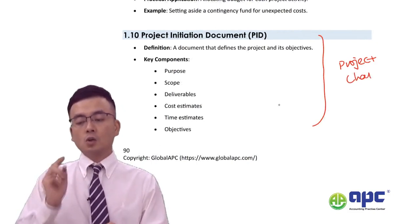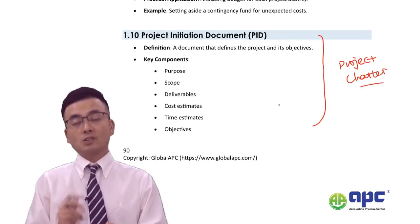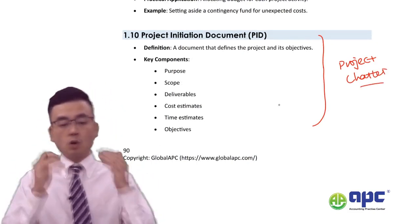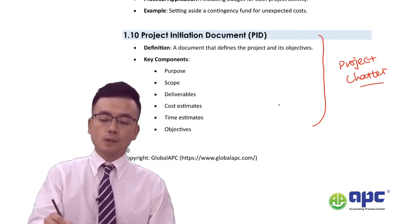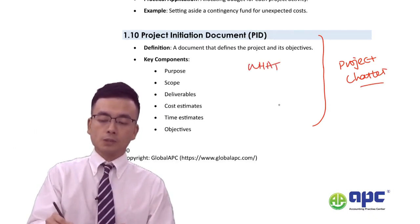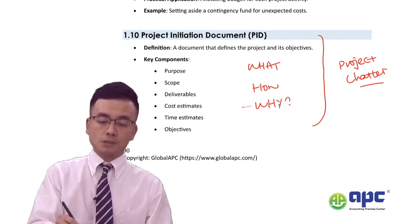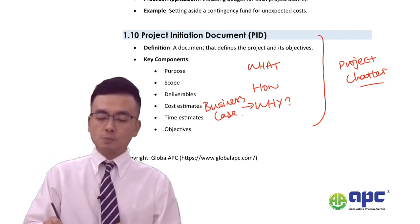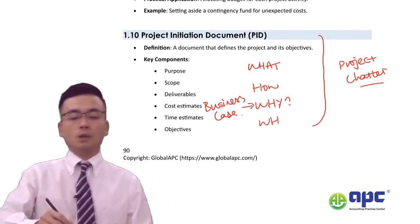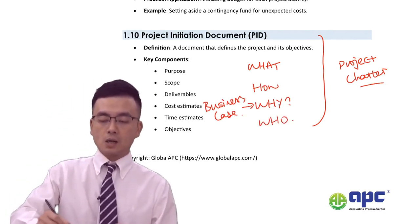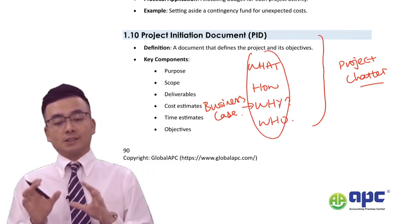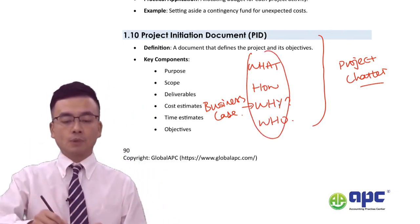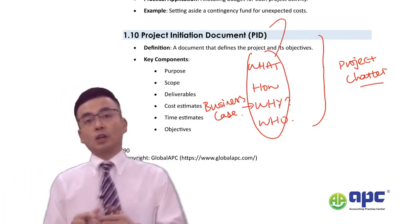The project initiation document covers what we need to do, how we're going to do it, why we're going to do it — essentially the business case, because we can have a lot of returns from doing this project — and who should be responsible. So: what, why, how, who — all summarised into the project initiation document.